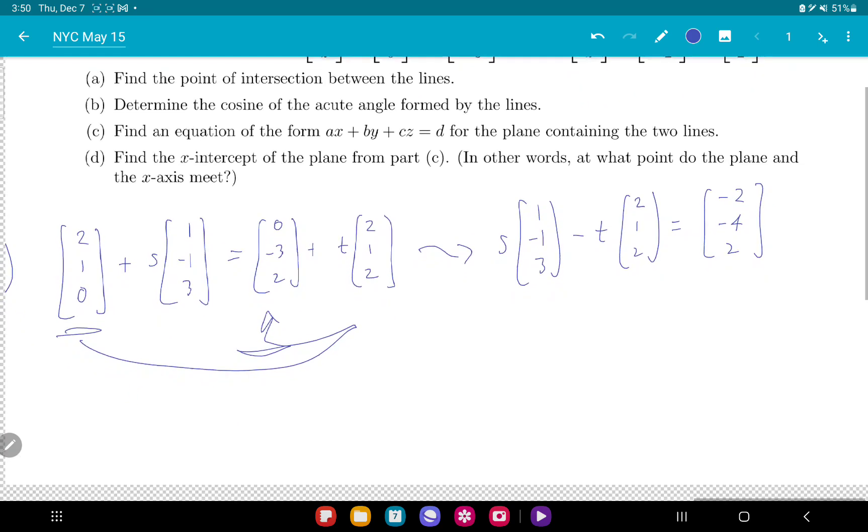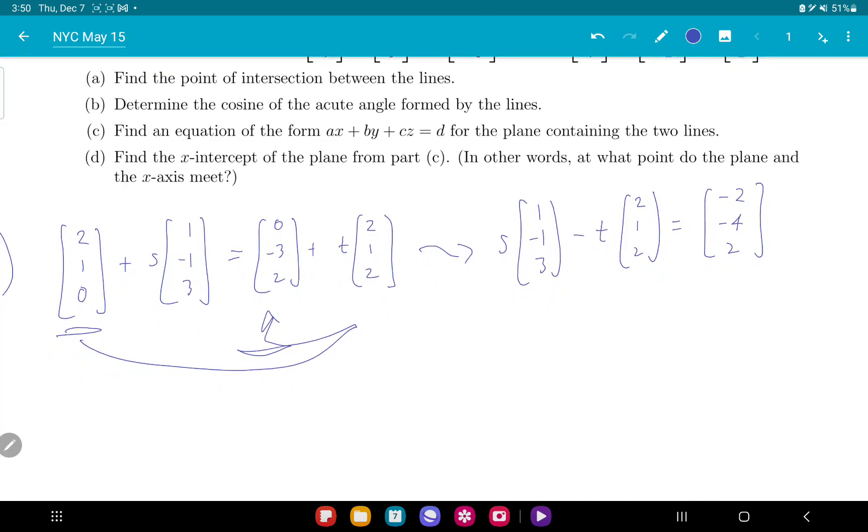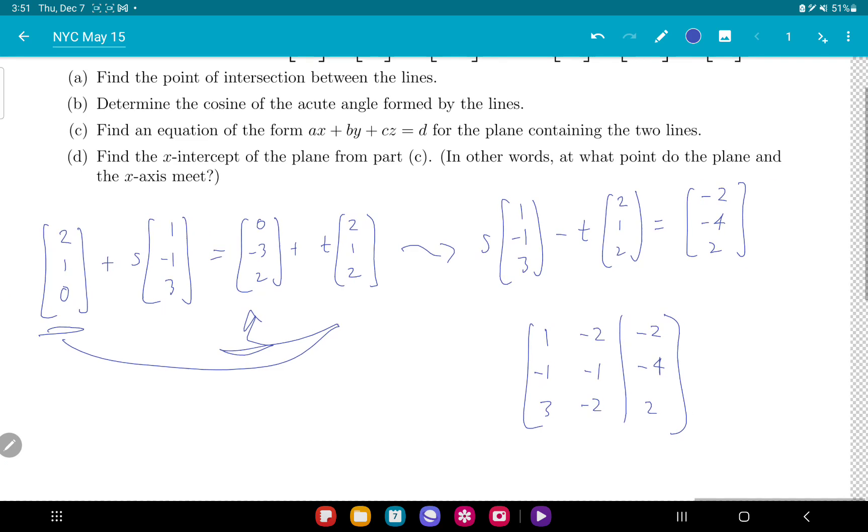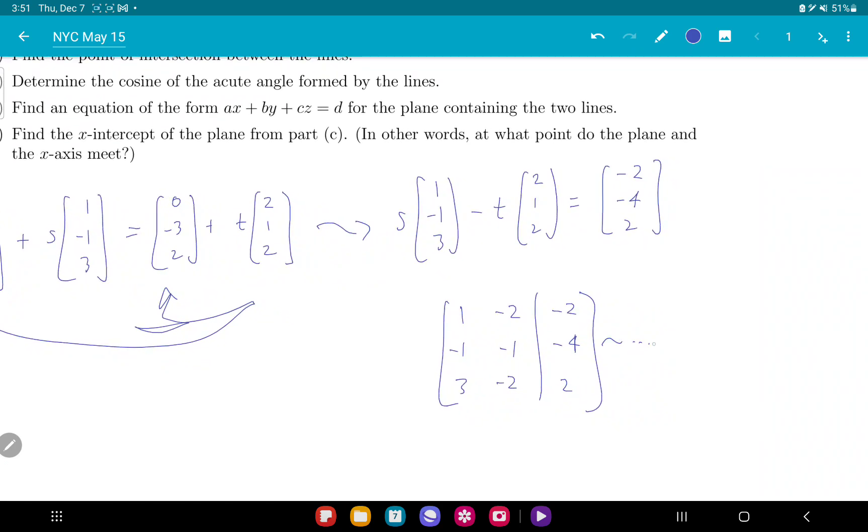So this is three equations, two variables. You put it into a matrix. Looks like this: 1, -2; -1, -1; 3, -2. And you reduce this, dot dot dot, I'm not going to bore you with the details, but we're going to get 2 and 2.